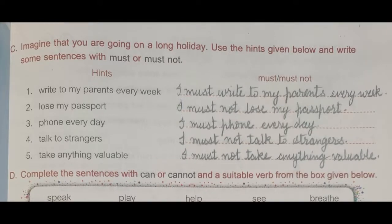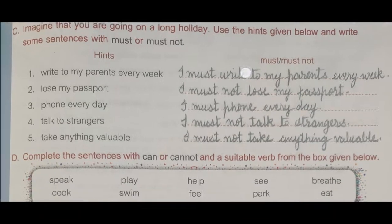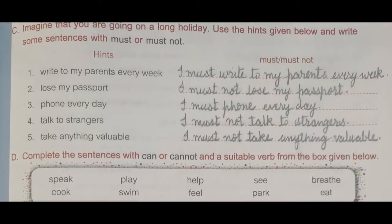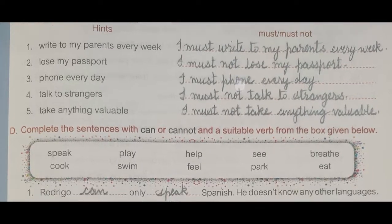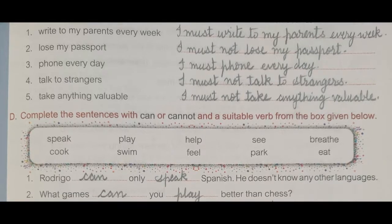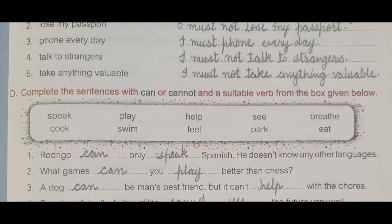Exercise answers for must and must not: I must write to my parents every week. I must not lose my passport. I must phone every day. I must not talk to strangers. I must not take anything valuable.